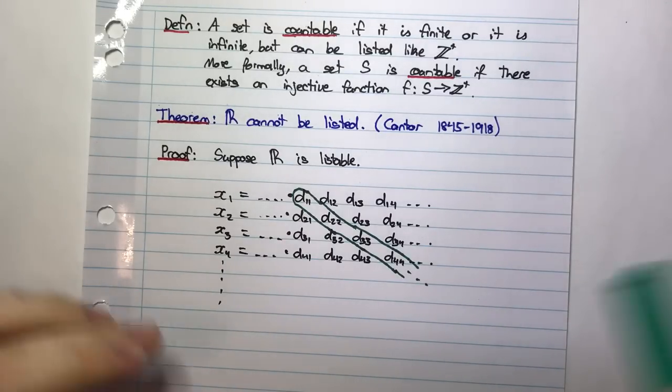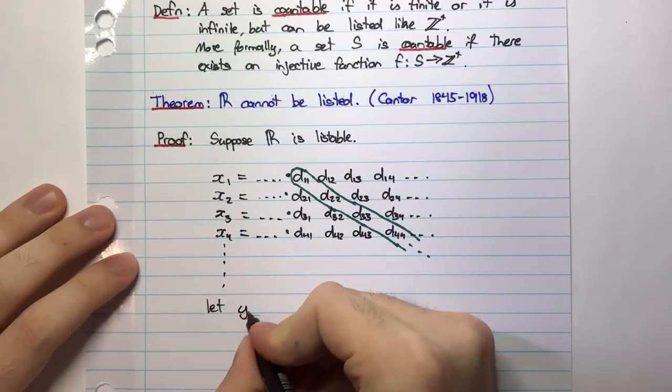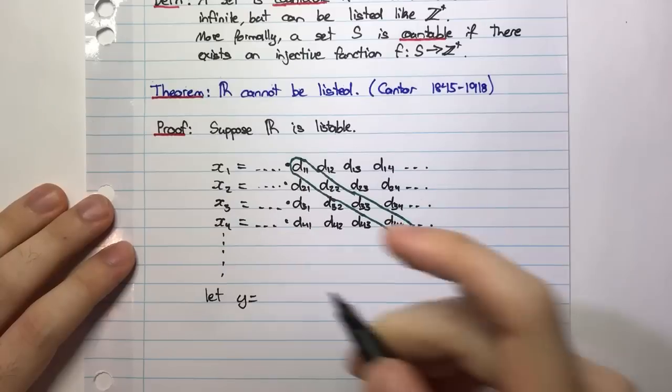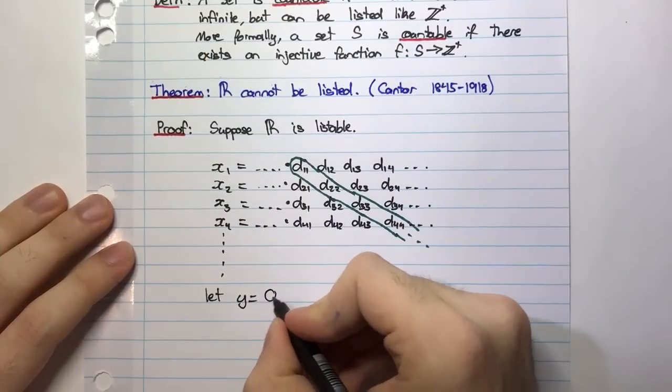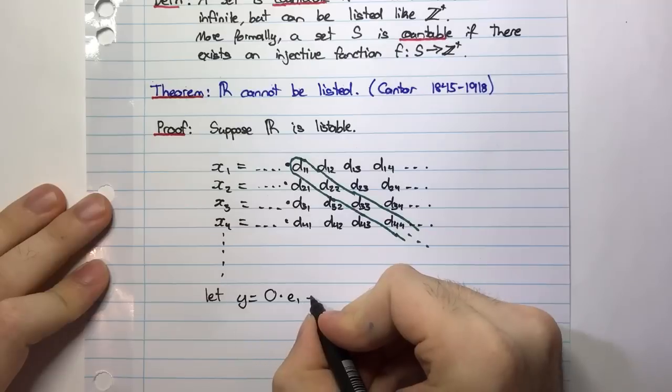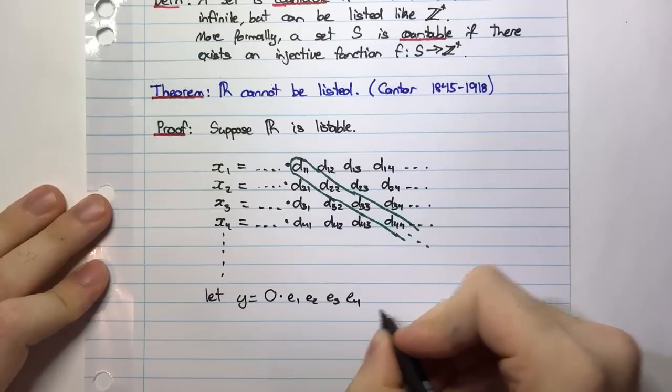Now I'm going to create this number. How am I going to create it? Well, I'm going to say let y be some number. Again, I don't care about the integer part. I could put anything, but I'm just going to put for the sake of simplicity zero. So zero point E1, E2, E3, E4, etc.